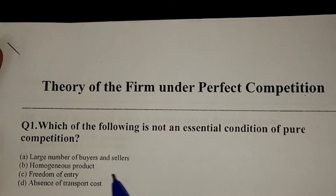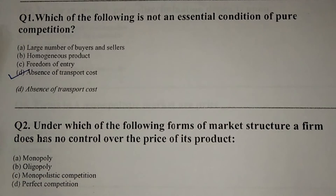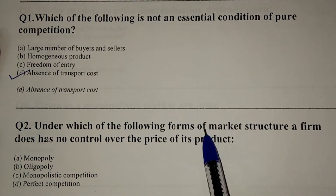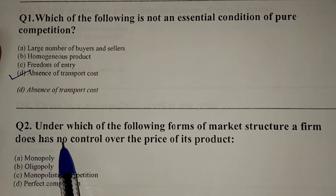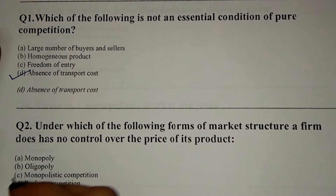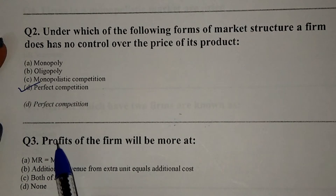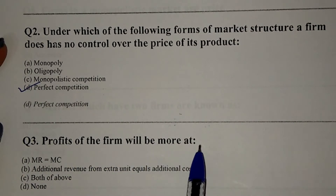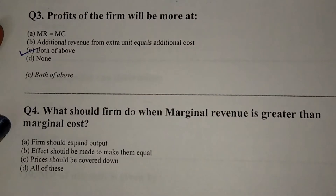The answer is option D: absence of transport cost. Under which of the following forms of market structure does a firm not have control over the price of its product? The answer is option D: perfect competition. Profits of the firm will be more at option C: both of the above (options A and B).